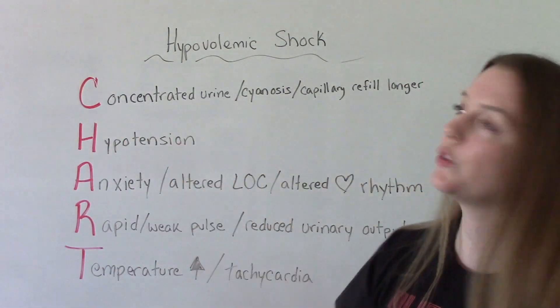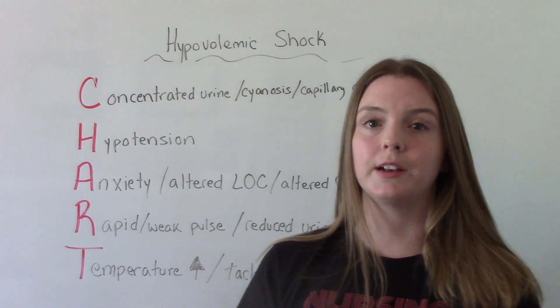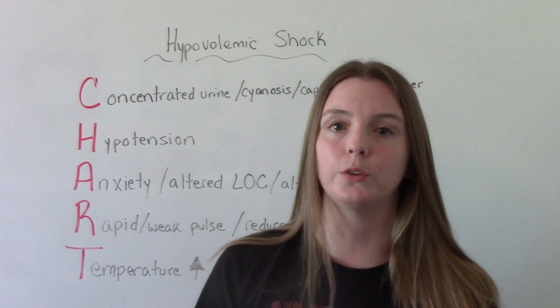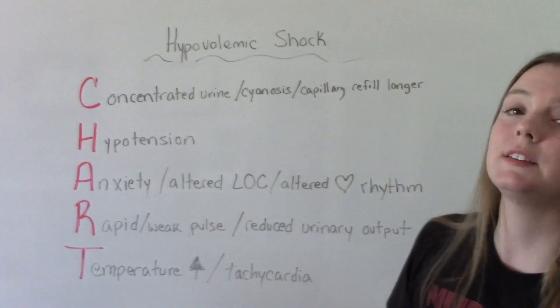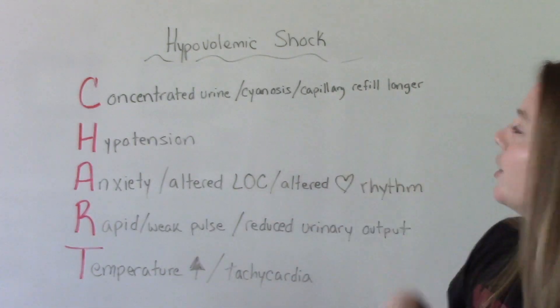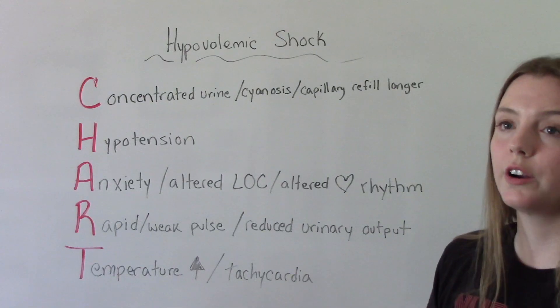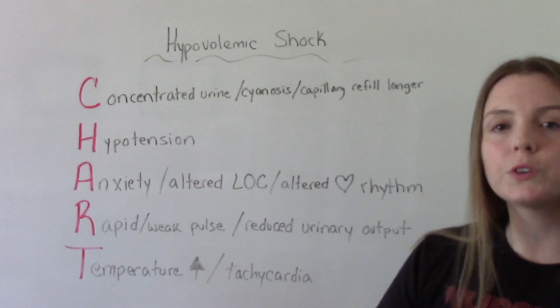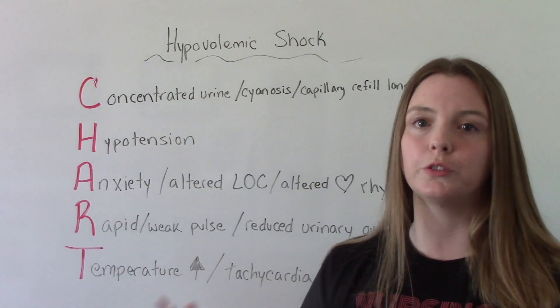C is for the urine being very concentrated, because we have low fluid volume. They're going to be cyanotic, and then their capillary refill time is going to be longer, which is reflective of that poor tissue perfusion.